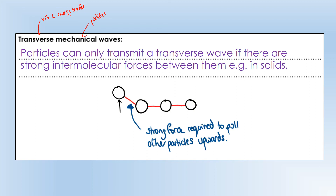Transverse mechanical waves do not transfer energy effectively in gases and don't do it particularly well in liquids either, but work well in solids. To start a transverse wave, a particle must vibrate upward, and this displacement must affect the next particle — moving this one up also moves the next one up, creating a chain reaction. This only happens with strong forces between particles. With weak forces, oscillating one particle upward has no effect on the next, so no wave forms.